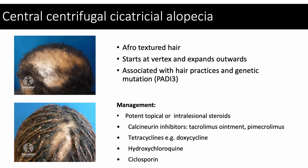Central centrifugal cicatricial alopecia is a scarring disorder most commonly seen in afro-textured hair and is the most common form of scarring hair loss seen in Black women. It starts at the vertex and expands outwards. The exact cause is unknown but is likely multifactorial. Certain hair care practices have been implicated, such as use of hot combs, relaxers, hair extensions, and weaves. A genetic component involving the enzyme peptidylarginine deiminase type 3 has also been suggested, as this enzyme is involved in modifying proteins essential to the formation of the hair shaft.